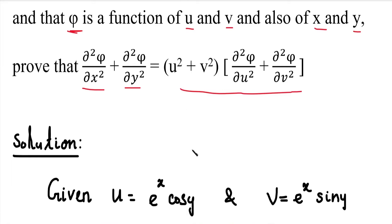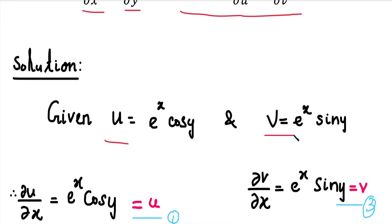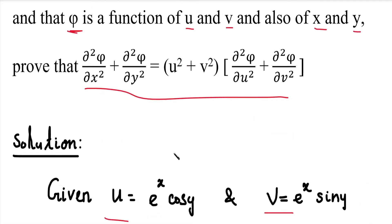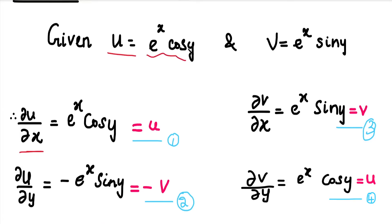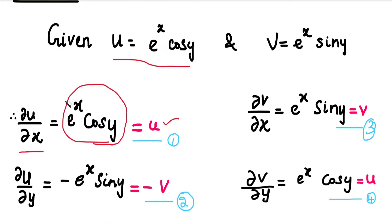First, we set up the partial derivatives. We have u equal to e power x cos y and v equal to e power x sin y. We need dou u by dou x, dou u by dou y, dou v by dou x, and dou v by dou y. For dou u by dou x, we differentiate u with respect to x partially. Since y is constant, cos y is constant, and e power x differentiates to e power x. So dou u by dou x equals e power x cos y, which equals u. This is equation number 1.